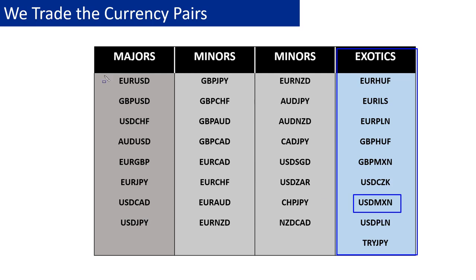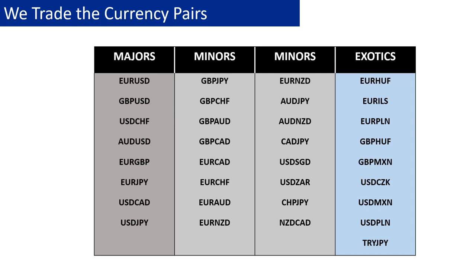Starting with the major currencies, there are a few reasons why I trade them. Number one: the spreads. I like to spread bet the market. If you're trading the euro/dollar, you're talking about a spread — the cost of trading in a spread betting account — of probably around 0.6 to 0.8. If you start getting above a one-point spread on the euro/dollar, it's starting to get a little expensive.